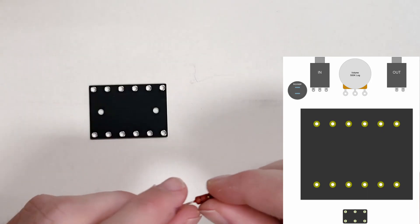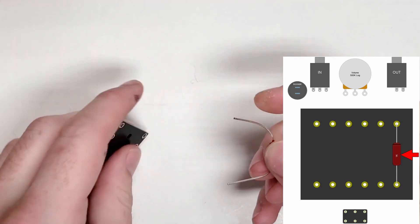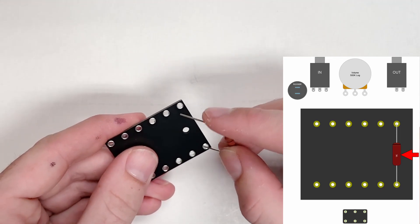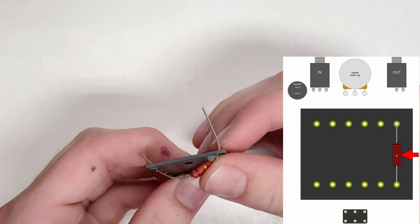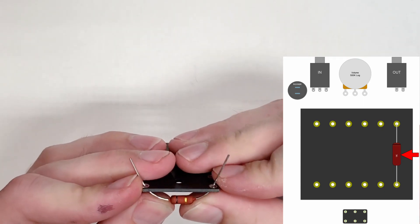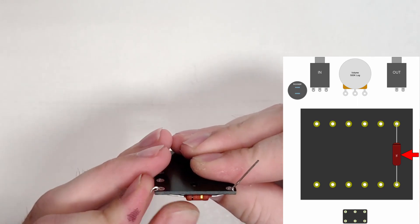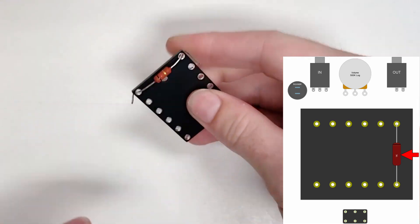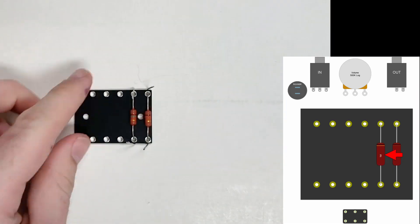We're going to start by inserting the components and securing them in place but not soldering yet. First we'll start with the lowest profile components which are the resistors. I bend the leads by hand into a rough u-shape and insert the leads into the target holes. Then I flatten the component to the board centering it as I do so. The extra leads are bent around the board to temporarily secure the components in place.